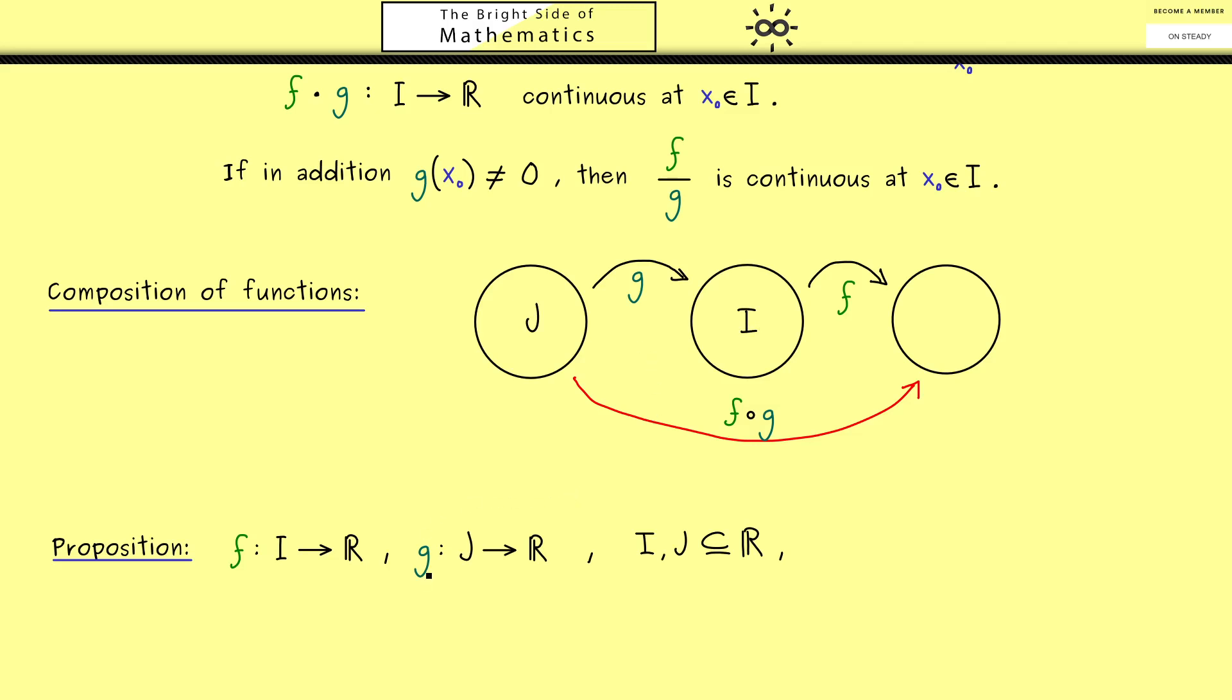Okay, now what you should see here is that g maps into the real numbers, but I does not need to be the whole real number line. Therefore we need one restriction here such that the composition makes sense. This means that the whole range of g, also called the image of J under g, is a subset of I. And you see, to denote the image I use brackets here. In our picture this means that g does not map outside of this set here. Of course the range of g could be the whole set I. The important thing is we don't hit anything outside.